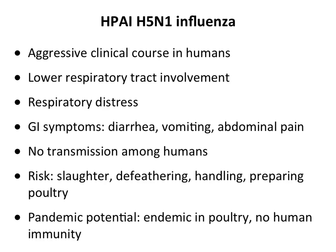In people, H5N1 influenza is pretty rare compared to other kinds of influenza, but its symptoms are quite distinct. It has a very aggressive clinical course — most often with lower respiratory tract involvement of the alveoli, which is not always the case with typical human influenza. You often have respiratory distress, and gastrointestinal symptoms: diarrhea, vomiting, abdominal pain. We're not quite sure why — whether it's secondary to cytokines, or because these viruses can be shed in the GI tract as they are in birds.